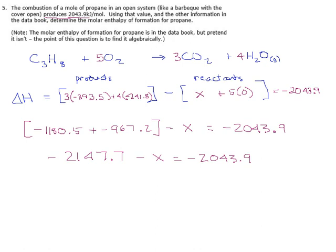Now, we have to do some algebra to this to isolate the X. I'm going to add 2147 to each side. Or if you want, you can think of it as take this negative number over to the right-hand side where it becomes positive, that's legit too. And you get minus 2043.9 plus 2147.7. We get that negative X is 103.8. Divide both sides by negative 1, and you get X is minus 103.8 kilojoules.